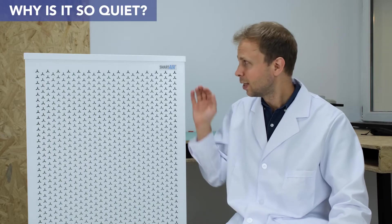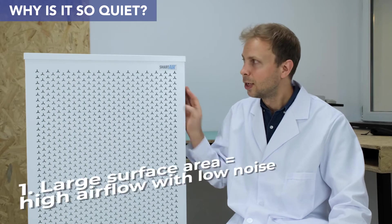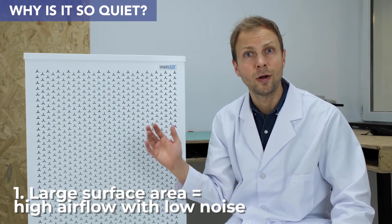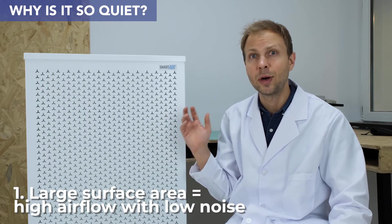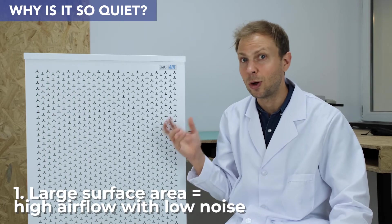Secondly let's talk about noise and how the Blast can be so quiet. So again this huge outlet area on the front means low levels of noise. We can let out a lot of clean air but not at a fast speed which means we don't have a lot of noise.